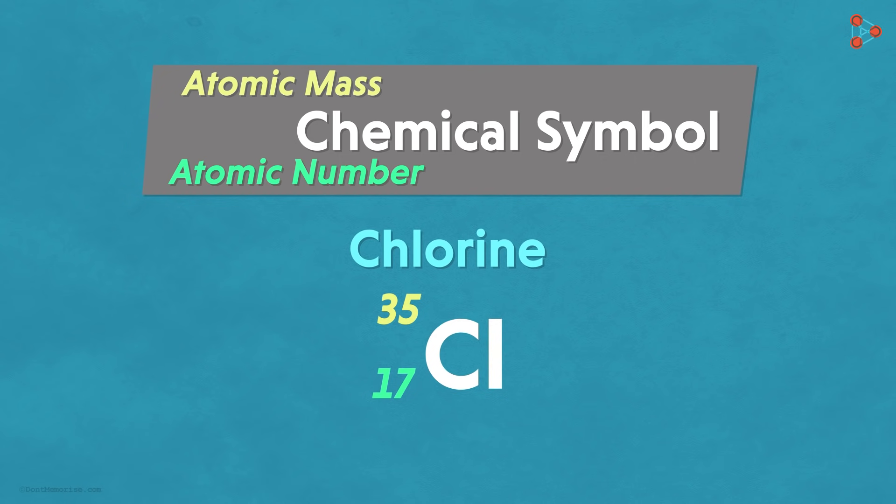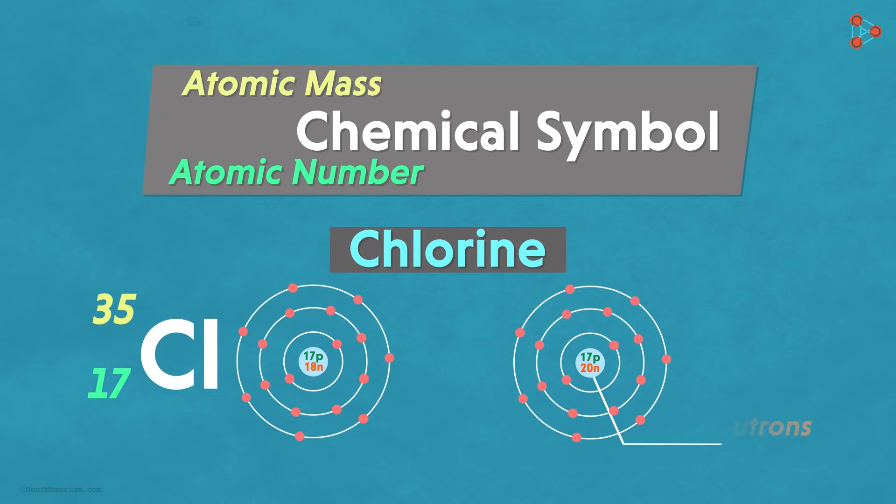Why did I say one type of chlorine atoms? Are there more types of chlorine atoms? Yes! Some chlorine atoms have 20 neutrons instead of 18 in their nucleus. Then how do we represent this type? Just like this representation.